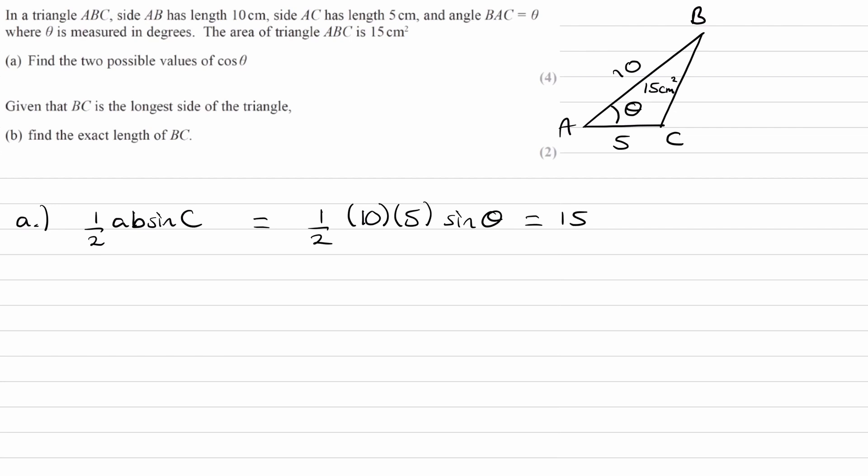Simplify this equation, so a half times 50 would be 25. 25 sine theta is 15, and then sine theta would be 15 over 25, which is three over five.